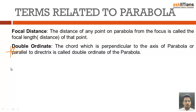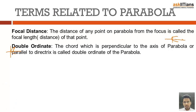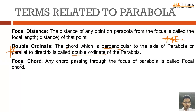Double ordinate is a very frequent term you will see when studying parabola. If I draw a parabola and draw any line perpendicular to the axis cutting the parabola at two points, that becomes a double ordinate. A chord is a line intersecting the parabola at two points, and a chord perpendicular to the axis — parallel to the directrix — is called a double ordinate.